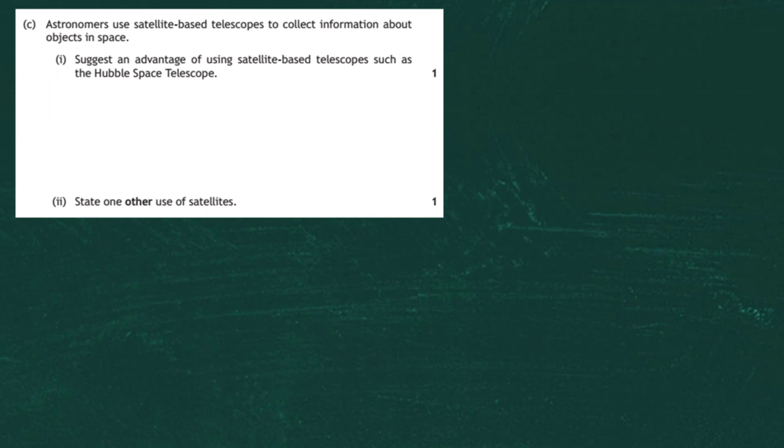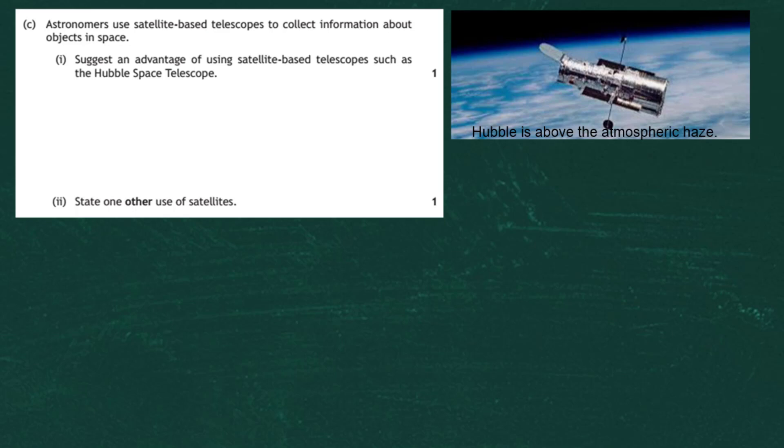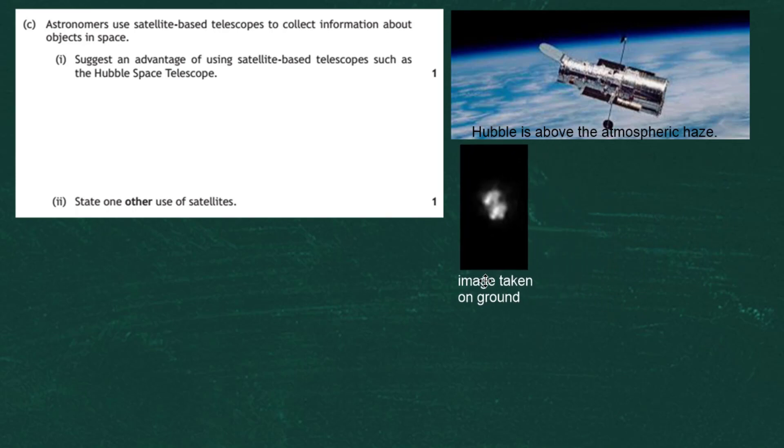Question 4 part C. Astronomers use satellite-based telescopes to collect information about objects in space. And for one mark we're asked to suggest an advantage of using satellite-based telescopes such as the Hubble Space Telescope. Well, the big advantage of using the Hubble Space Telescope is the fact that it's above the atmospheric haze, it's above the atmosphere. And you can see in the next two images how important that is. Here's a picture taken on the ground of an object in space, this is taken from a telescope based on the ground, looking up through the atmosphere.